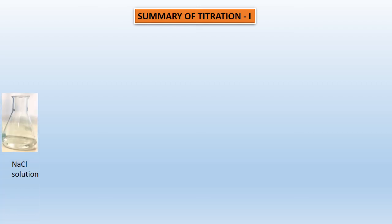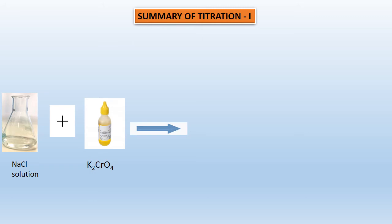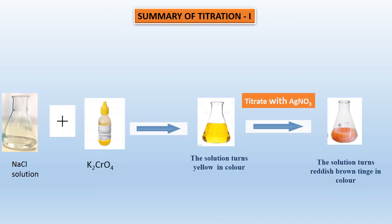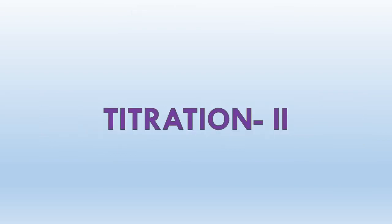Summary of Titration 1: we have taken NaCl solution, added potassium chromate indicator, and it turns yellow in color. Upon titration with AgNO₃, it turns reddish brown (orange) in color — that is the reddish brown tinge, your endpoint. Let us now do the second titration.